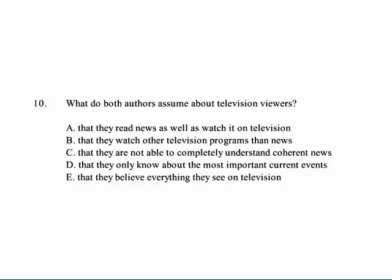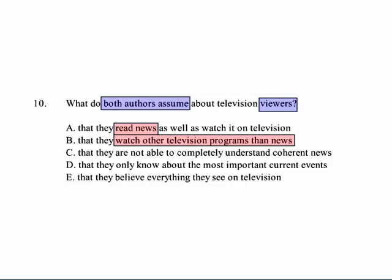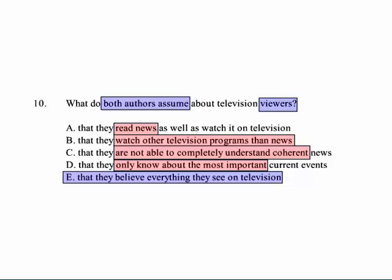Question ten asks what both authors assume about television viewers. We're talking about both authors. We can rule out A — neither author really talks about reading the news. B — they watch other television programs other than news — of course, but neither author is addressing that. C — they are not able to completely understand coherent news — it's implied perhaps by the second author, but not the first. D — they only know about the most important current events — no, because the second passage says they don't know about major events. However, both passages show that they believe people believe everything they see on television — they don't give people much critical sense. So E is our answer for what both authors assume about television viewers.